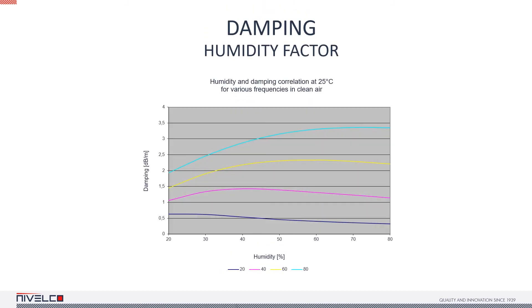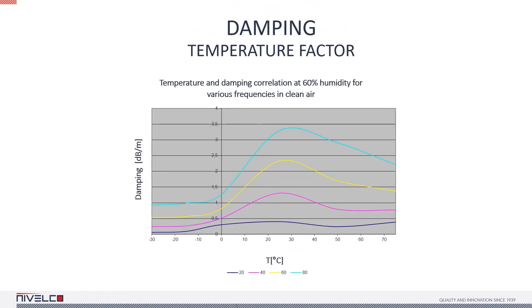Humidity, the concentration of water vapor in the air, is a major damping factor. Another significant damping factor is the temperature of the atmosphere in which the signal is traveling.